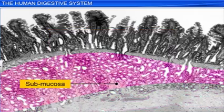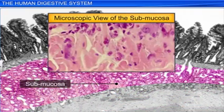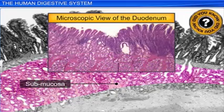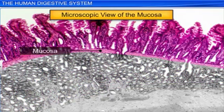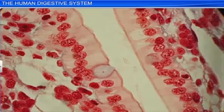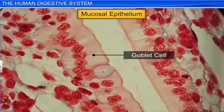Adjoining the muscularis is the submucosa, which is a soft connective tissue layer containing blood vessels, nerve endings, and lymphatic vessels. Did you know that in the duodenum, glands are also present in the submucosa? Finally, the mucosa, the innermost layer of the alimentary canal, lines the lumen of the alimentary canal. It is an important layer, as the mucosal epithelium has goblet cells which help in lubrication by secreting mucus.